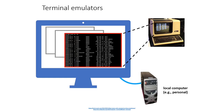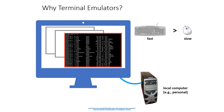Today we don't have terminals and mainframes that we connect to like that. We have far more powerful local personal computers right here on our desks. So what we use instead are known as terminal emulators. Why would we ever want to use a terminal emulator? Well, they can be much faster than using a mouse. They're very good for navigating your file system — it can be much quicker to type the names of the directories you want to move through than hunting for them in a list of files and clicking on them with the mouse.